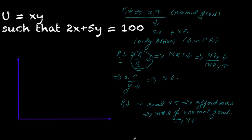Slutsky said: if purchasing power is constant, I should be able to afford exactly the same bundle as before — no more, no less. If I can afford more than the original bundle, my purchasing power has increased; if I can afford less, it has decreased. So Slutsky said: how do we keep purchasing power constant? By making the original bundle just affordable — e0 must lie exactly on the new budget line.